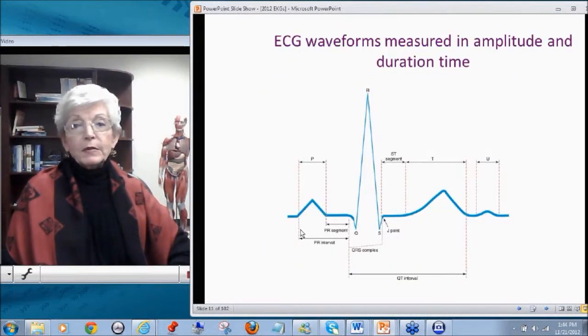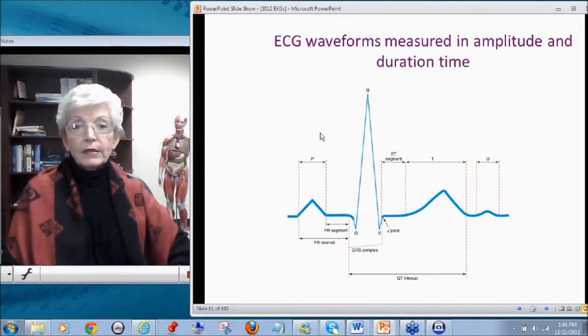So EKG waveforms are measured in amplitude and time, and amplitude is on this axis, time is on this axis. And this, although it displayed it on the previous slide, it didn't talk about it, but following the T, there you may see another little waveform, and that is called the U-wave.